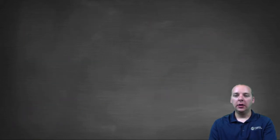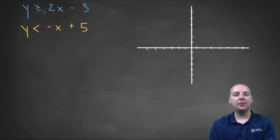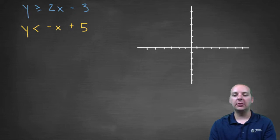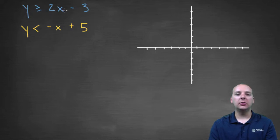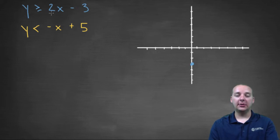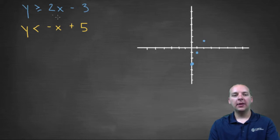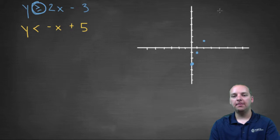Let's give it a try. I've rewritten the same exercise on a blank page and I'll color code these so we can keep everything straight. I've got a blue inequality and a yellow inequality. Starting with the blue one, I'm going to graph y equals 2x minus 3. That has a y-intercept of negative three and a slope of two, so I'll go up two over one repeatedly. This is going to be a solid line because of the or-equal-to that's in there.